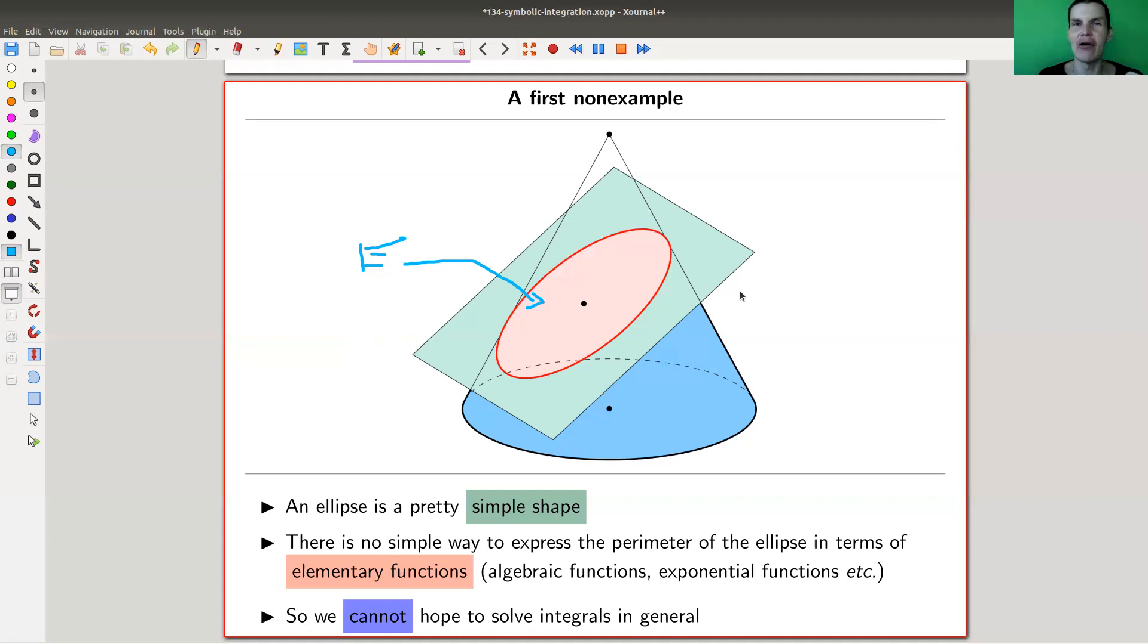And you might wonder whether it now helps to throw in this extra function into elementary functions. Yeah, then you get a slightly bigger set, but there will be still things you can't solve. Throwing in the next one, and there will be still things you can't solve. Functions are just somehow too crazy. So we cannot hope to do that in general. And people were aware of that, of course, for centuries.